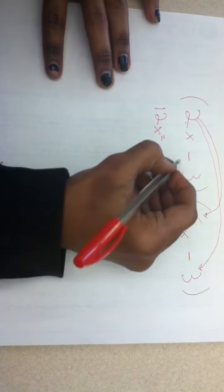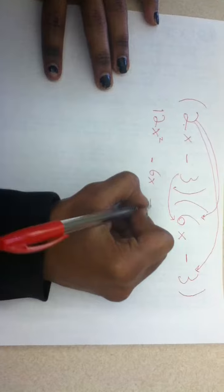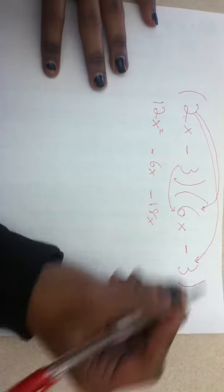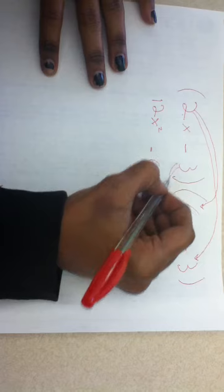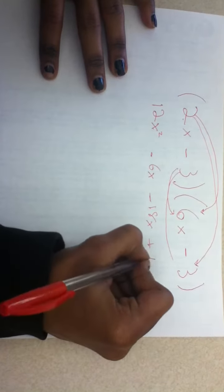The next step is negative 3 times 6x, which will give us negative 18x. The last step is negative 3 times negative 3, which will give us positive 9.